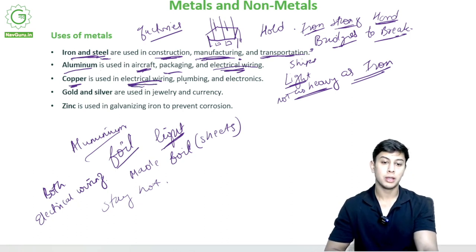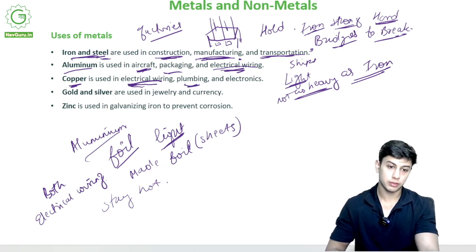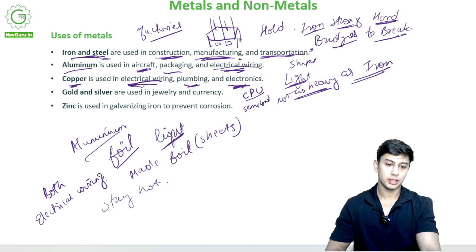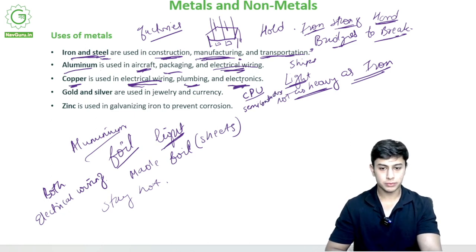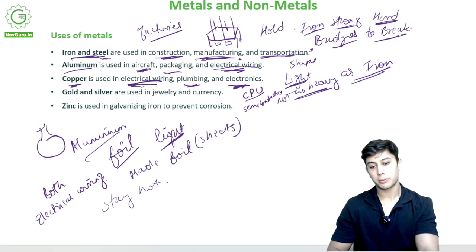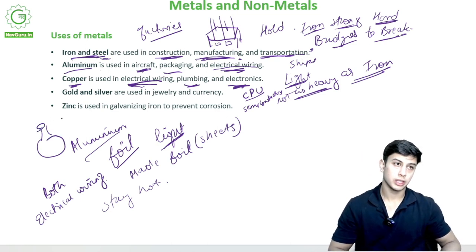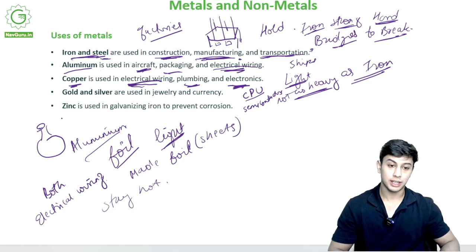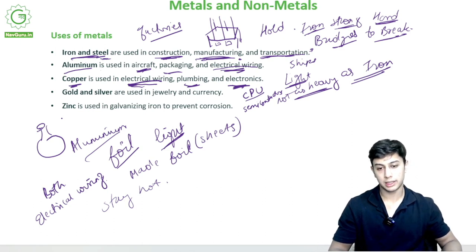We use copper more than aluminium for wiring because aluminium is more expensive. Copper is used in electrical wiring everywhere, plumbing — we see pipes made of copper. In electronics, if you open your CPU, the motherboard also has some part of copper because it is easier to let electricity flow through copper. Copper is also used for pots — in earlier days, copper matkas were used to store water.